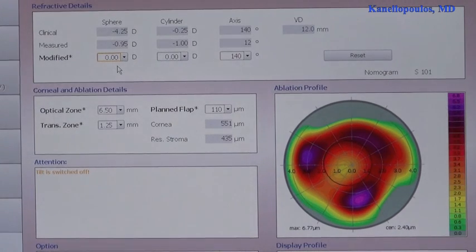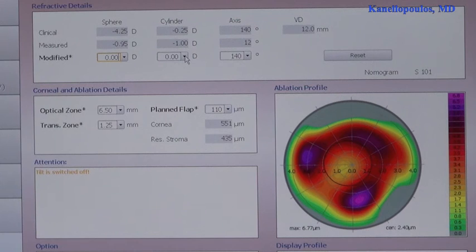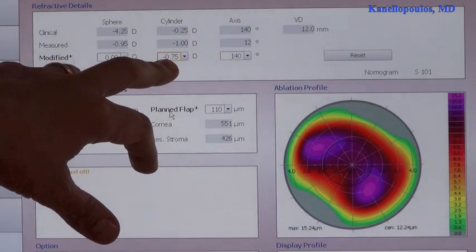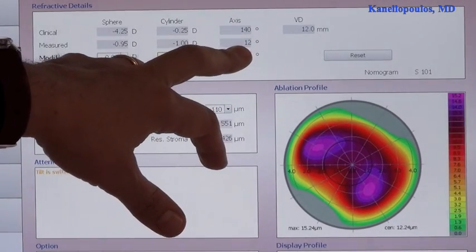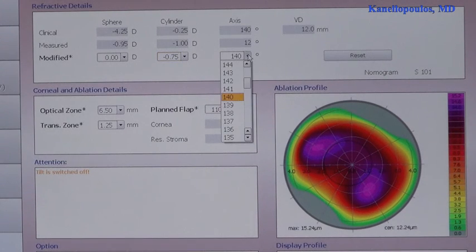So, now, we will jump to correct the astigmatism that the topographer suggests. So, I'll add to the 0.25 as a refraction. Arbitrarily, half a diopter more astigmatism. So, I'll go to minus 0.75 of astigmatism. And, I will respect the topographer's axis. So, I will jump from 140 and go to 12 degrees. And, this is a huge leap of faith.